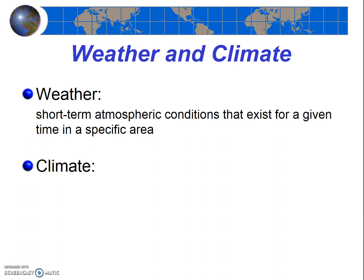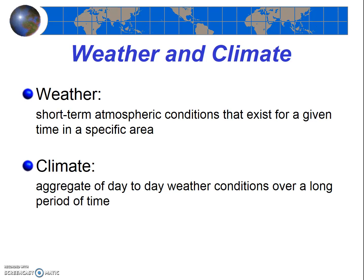Weather is the short-run atmospheric conditions that exist for a given time in a specific area. Climate, on the other hand, is a summation or aggregate of day-to-day weather conditions over a long period of time. Thus, weather deals with conditions for a specific short period of time in a specific place, and climate is generally more of a long-term aggregate.